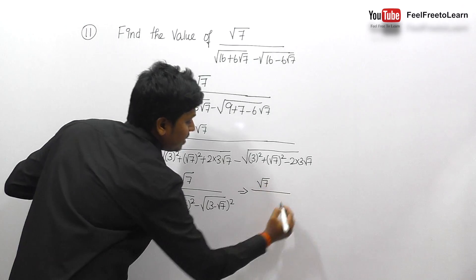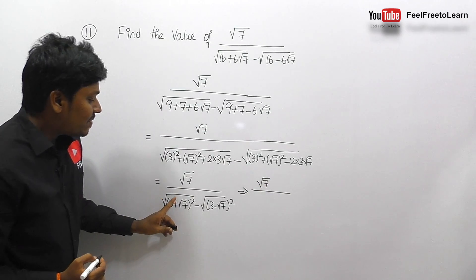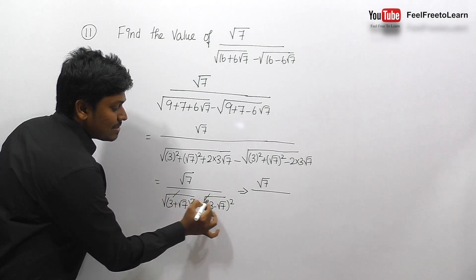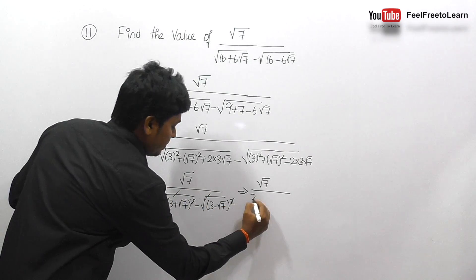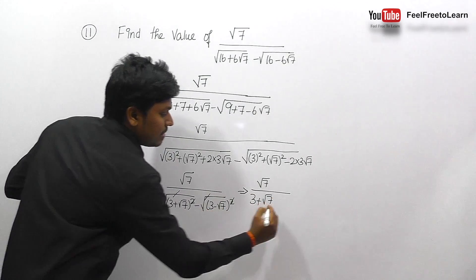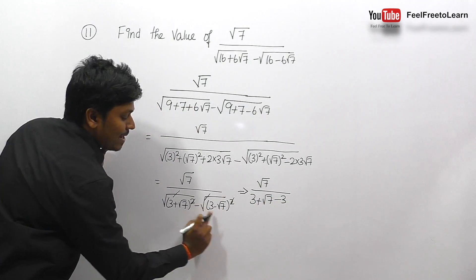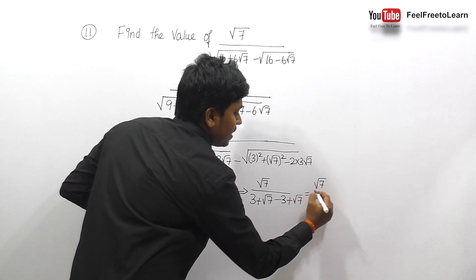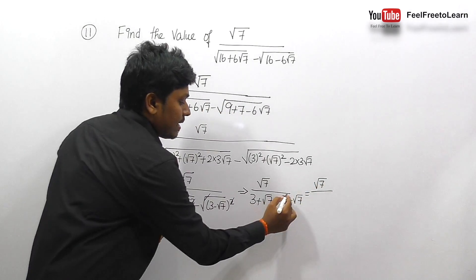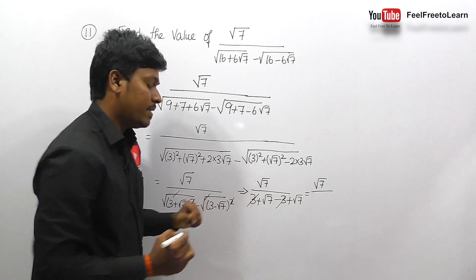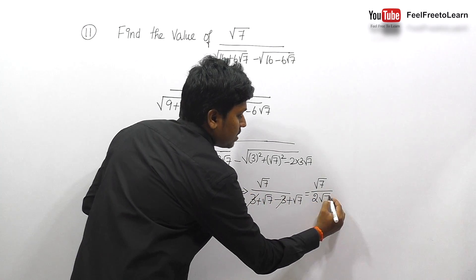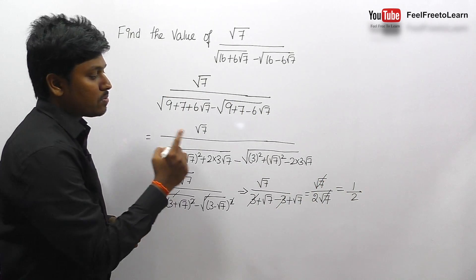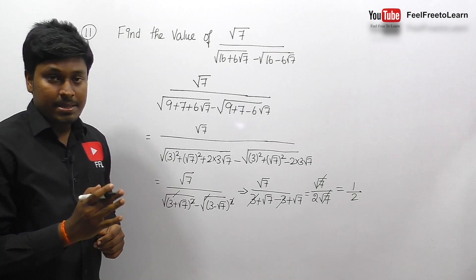We know that root can be written as power 1/2, so we can cancel root and square. The denominator becomes (3+√7) minus (3-√7). The minus of minus becomes plus √7. So the numerator is √7 divided by: 3 minus 3 cancels, leaving 2√7. Finally we can cancel √7 and √7, giving the answer for question 11 as 1/2.